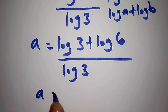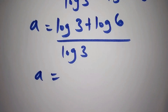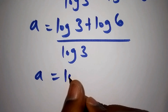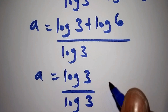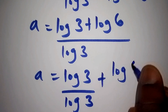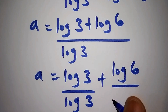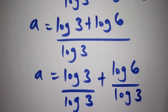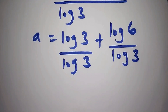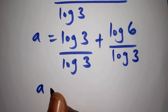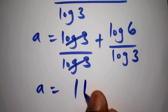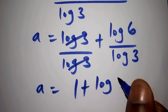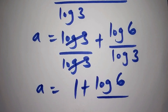Now we divide through by log of 3. We split the fraction: log of 3 over log of 3 plus log of 6 over log of 3. Log of 3 and log of 3 cancel, so we now have a equals 1 plus log of 6 all over log of 3.